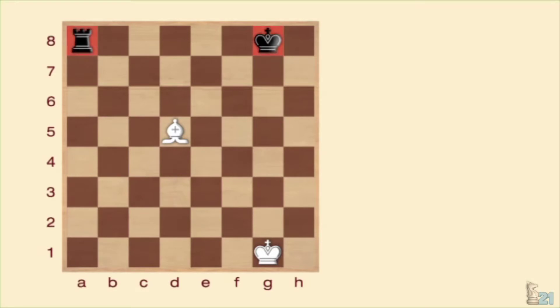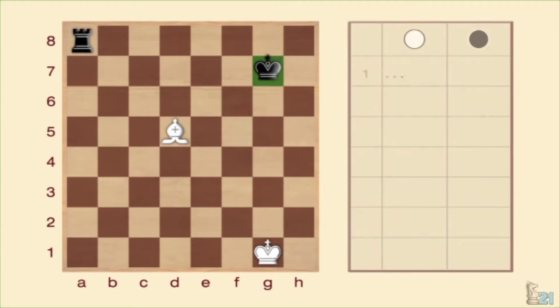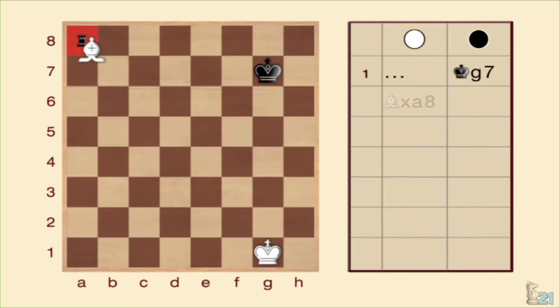Sigamos con el alfil, que como veis, también está capacitado para llevar a cabo la jugada de una forma similar a la que vimos con la dama. En este caso, amenaza el rey y la torre. El rey tiene que escapar y captura la torre, ganando un material muy valioso.